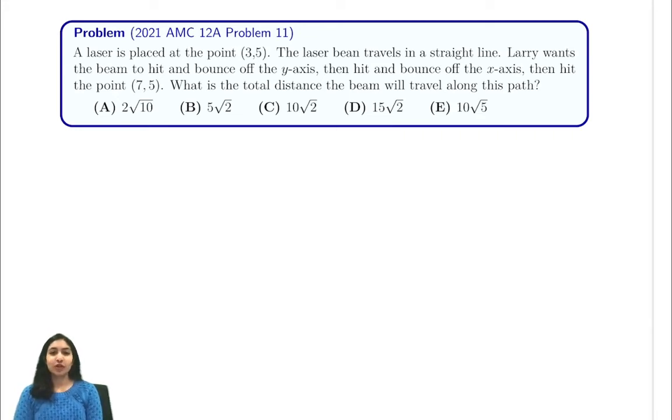Hi everyone! In today's video we're going to be going through 2021 AMC 12A problem number 11. This problem tells us that a laser is placed at the point (3,5). The laser beam travels in a straight line and Larry wants the beam to hit the y-axis and then hit the x-axis and then go to the point (7,5). So let's do this on a graph.